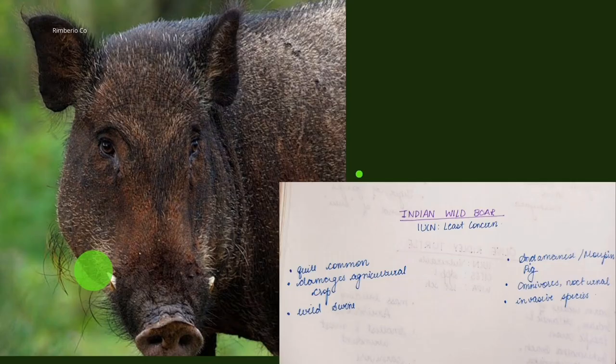Next up we have the Indian wild boar. Since they are most commonly found and can behave like invasive species, their IUCN status is Least Concern. They are also called omnivore pigs. They are omnivores and nocturnal — being nocturnal means they can destroy agricultural fields at night, and they are majorly found in agricultural lands. They are the wild swine.